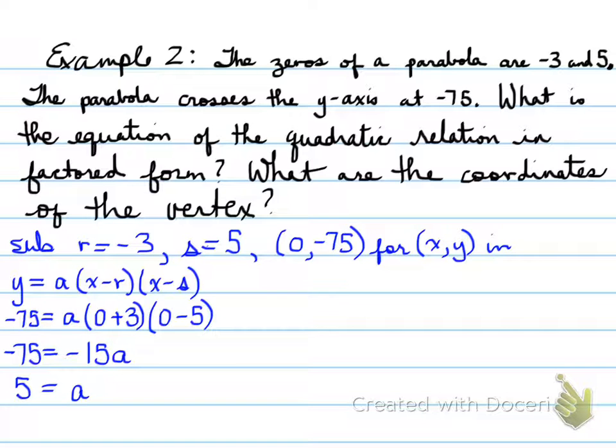We get a is equal to 5. So what we've discovered now is the a value, which tells us the part of the equation we were missing. So our final equation is y equals 5 times x plus 3 times x minus 5. Keep in mind that in any equation, whether it be linear or quadratic, there is always a y and there always is an x squared.